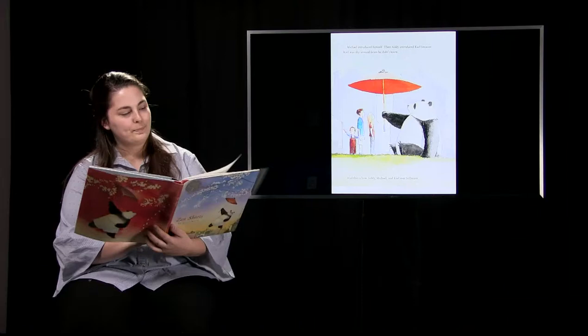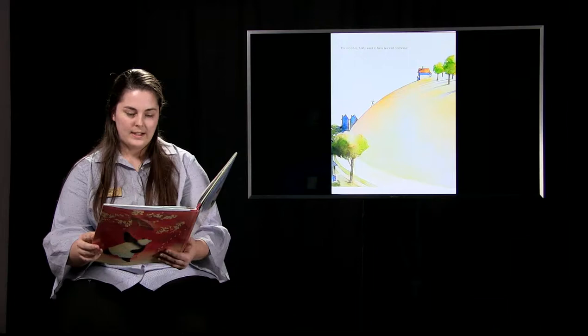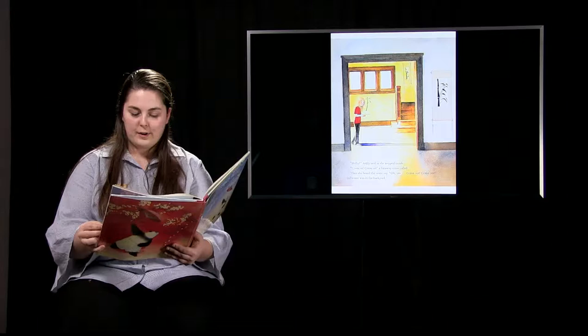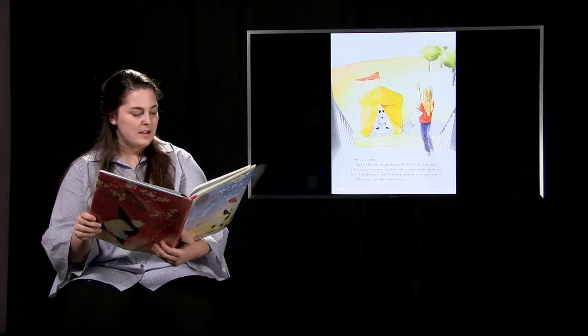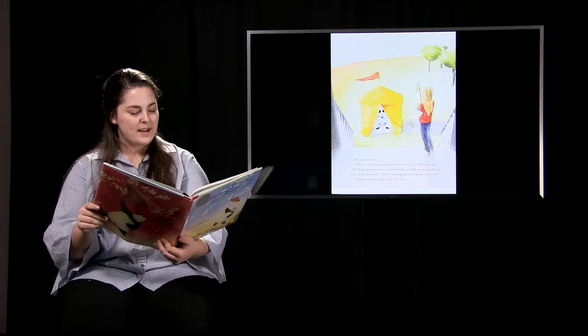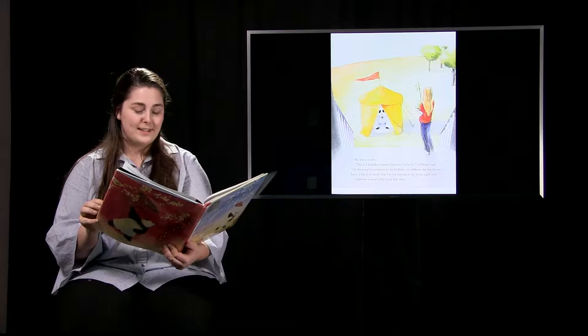The next day, Addie went to have tea with Stillwater. Hello? Addie said as she stepped inside. Come in, come in, a far away voice called. Then she heard the voice say, oh yes, come out, come out. Stillwater was in the backyard. He was in a tent. This is a birthday present from my Uncle Rye, Stillwater said. He always gives presents on his birthday to celebrate the day he was born. I like it so much that I'm not staying in my house right now. Stillwater invited Addie to sit with him.